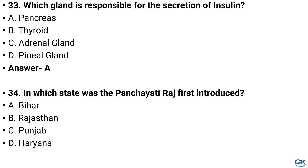Question number 34. In which state was Panchayati Raj first introduced? Option A: Bihar, Option B: Rajasthan, Option C: Punjab, Option D: Haryana. And the answer is Option B: Rajasthan.